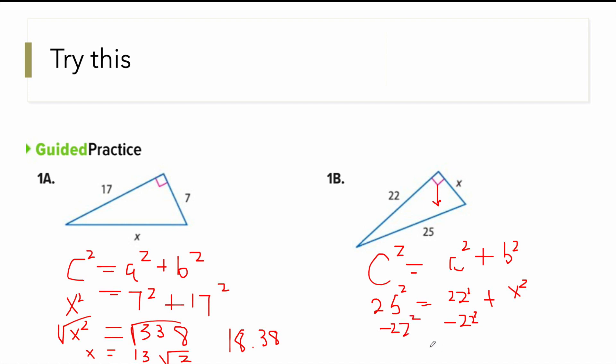So X squared will be equal to 25 squared minus 22 squared. You get 141. Now you square root, you square root, X is equal to square root of 141, which is 11.87.